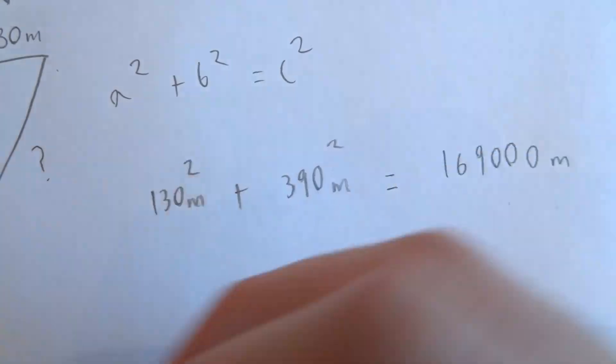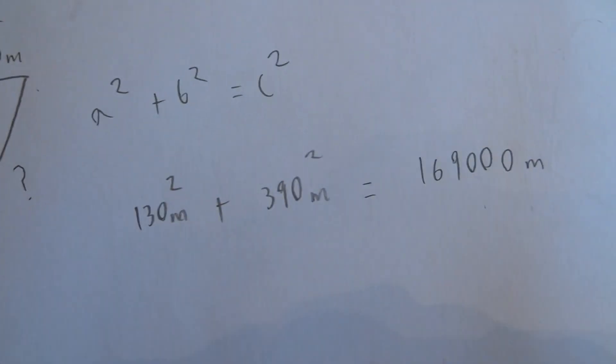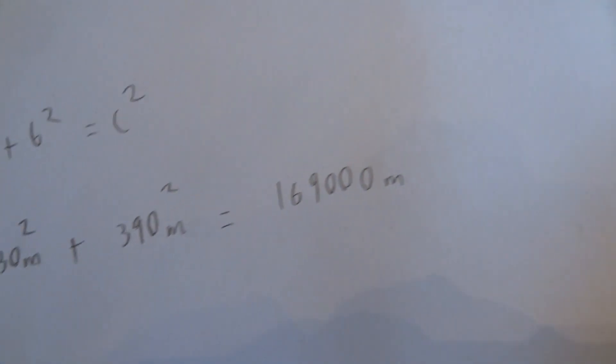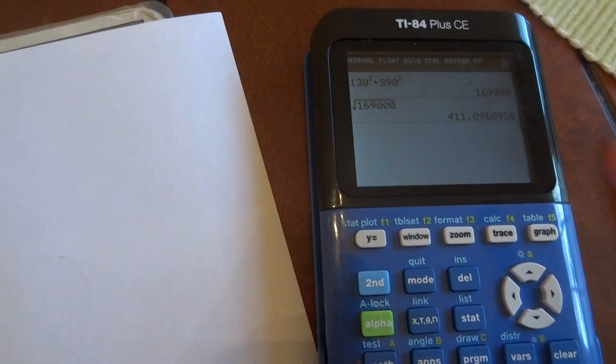But this number is C, so in order to find C we have to take the square root of this number.